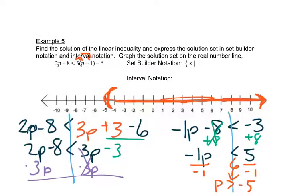So that's our graph. Set builder notation, we just copy that. It's greater than negative 5. This should be p actually in there, not an x. And then close the brace. So that's our set builder notation.